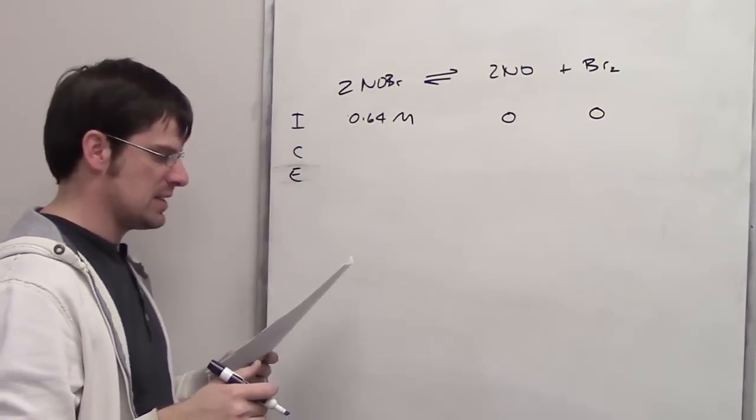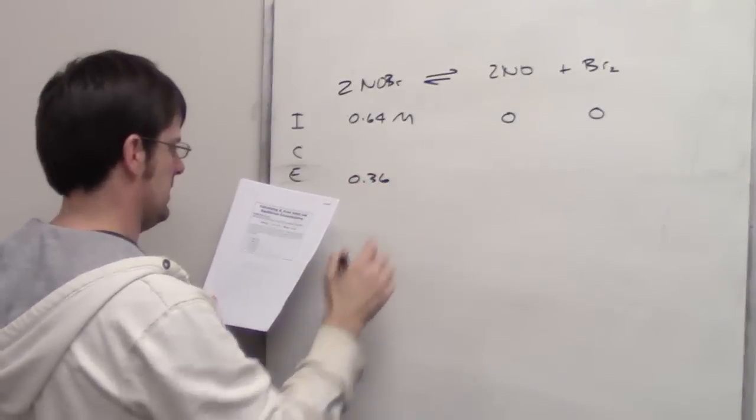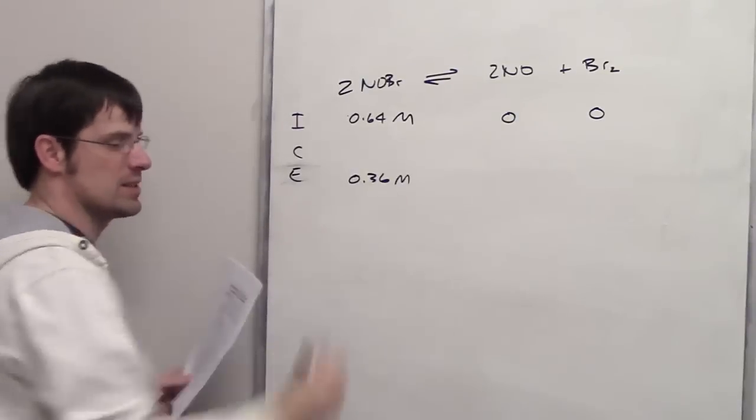It says then, at equilibrium, the flask contains 0.36 moles of NOBr. Once again, it's in a 1 liter flask, so that's the concentration in moles per liter.